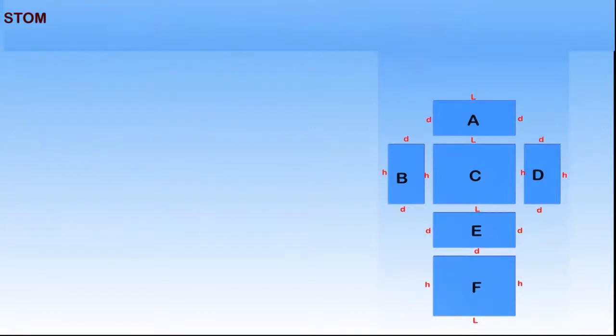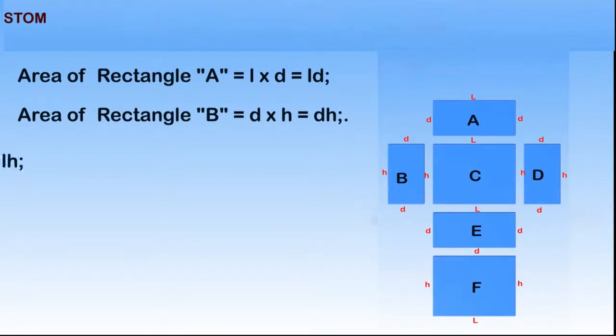To calculate the area of rectangle A, we will have it to be length multiplied by depth. Side B is depth multiplied by height. Area of rectangle C is length multiplied by height.